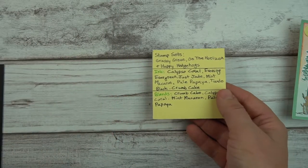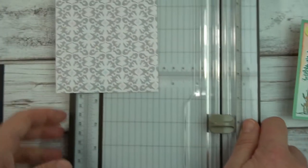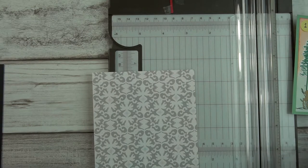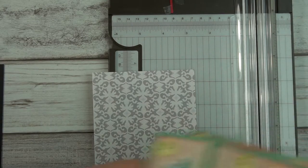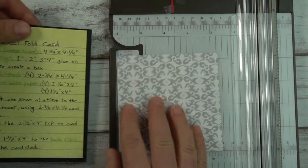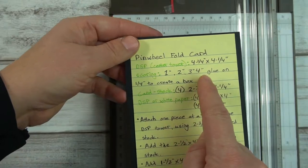And the first thing you'll need is your trimmer and a piece of DSP. So the piece of DSP I have here is four and one-fourth by four and one-fourth. And it's just very simple scoring. So my scoring will be one inch, two inches, three inches, and four inches.